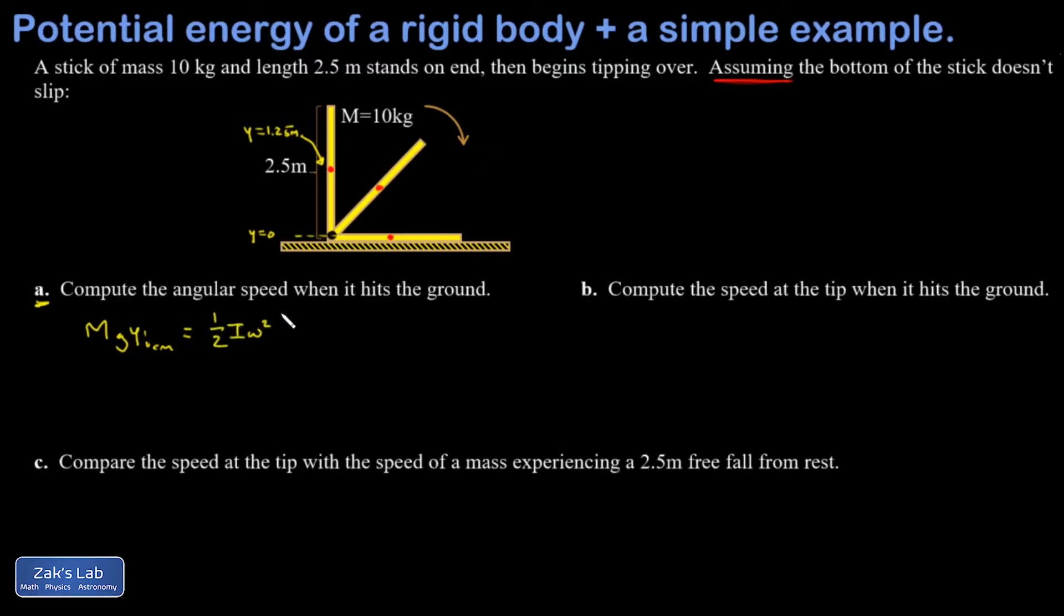All right, to finish the problem, you need to know that the moment of inertia of a rod rotating about its end is one-third ml squared. And you just look these formulas up whenever you need them. And I'll just do that as a side calculation up here. So I have one-third times the mass, which was 10 kilograms times the length squared. And I get a total moment of inertia of 20.8 kilogram meters squared, just keeping three sig figs.